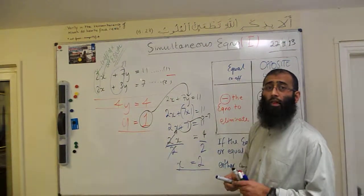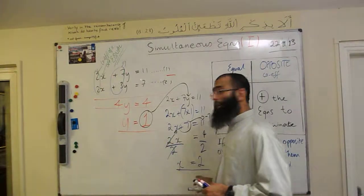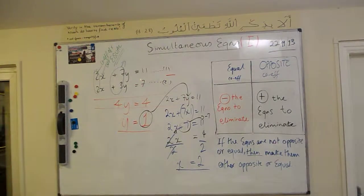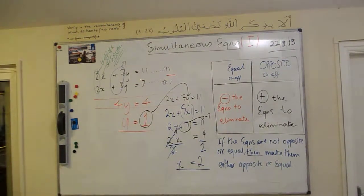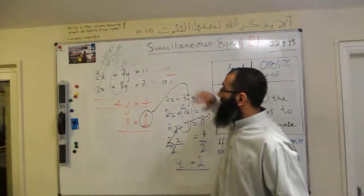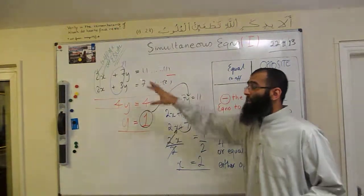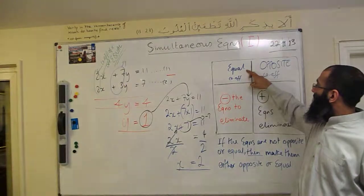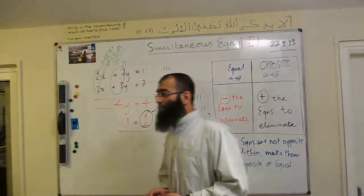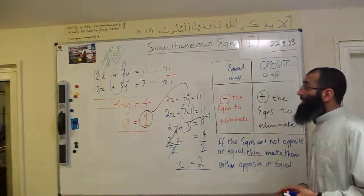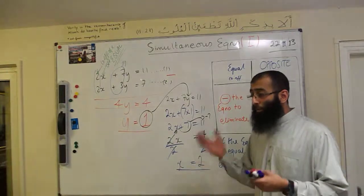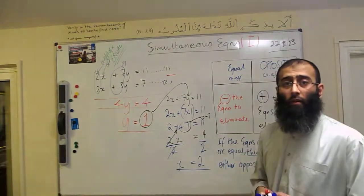That gives us x is equal to 2. So we've got our solution now: y equals 1 and x equals 2. Thank you very much for joining us on this question. Don't forget — when the coefficients are equal, we must minus. Please join us again in the next video, where we'll be looking at when we need to start multiplying some of the equations to make them opposite or equal.